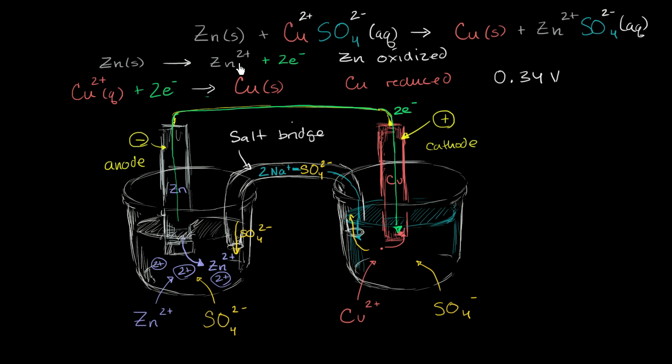If you were to look up the zinc reaction in a table of standard electrode potentials, you might see negative 0.76. Now you have to be careful though, because they're going to give you,